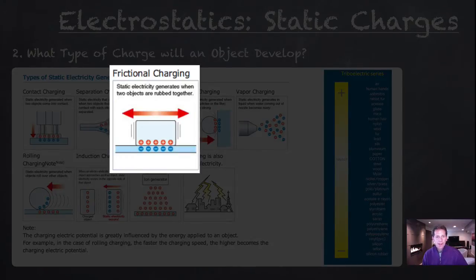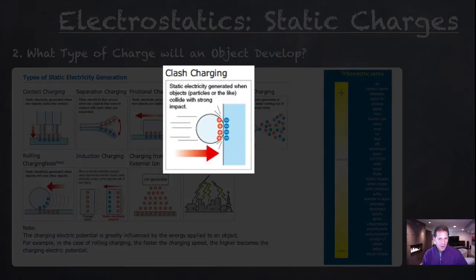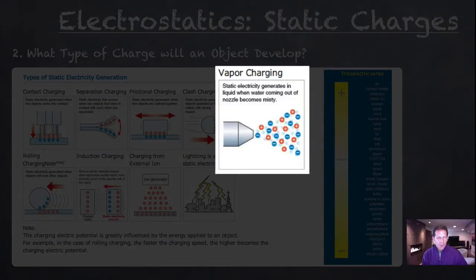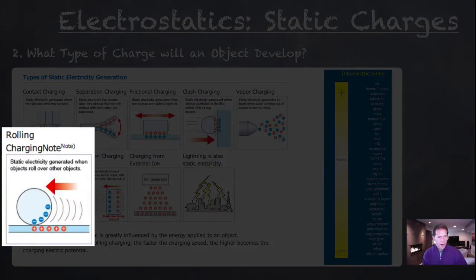Frictional charging is the next example, and that's what we did with the wool and the vinyl. Clash charging, two objects colliding with some velocity. At impact, electrons could transfer from one to the other. Vapor charging, most commonly seen with spray paint or spraying perfume. As the particles go through the very narrow nozzle, it's like friction. Some electrons would likely be transferred off of the nozzle onto the vapor, or vice versa, depending upon what was used. And finally, you can roll one object over top of another. Again, there's some physical pressure there, which would cause some transfer of electrons from one object to the other.